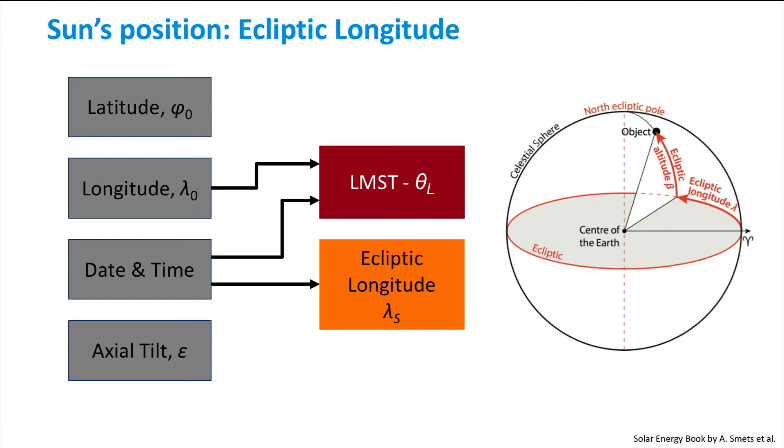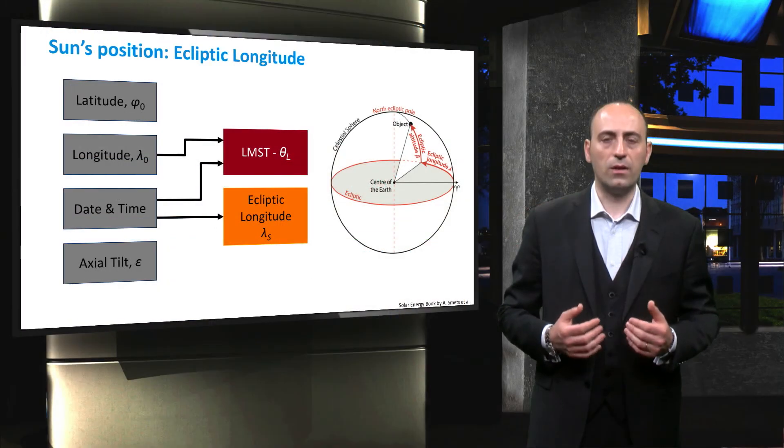So, this orange box represents the equation to calculate the ecliptic longitude lambda s of the Sun, given the date and the time. In other words, it measures the angular distance of the Sun along the ecliptic from the vernal equinox.